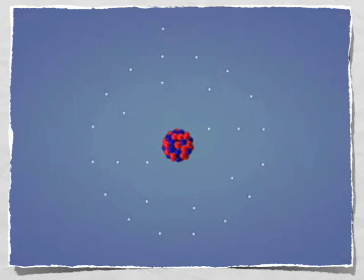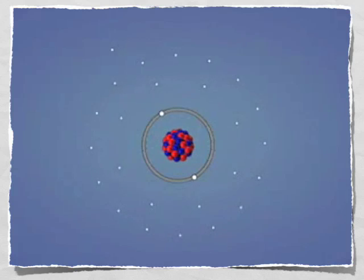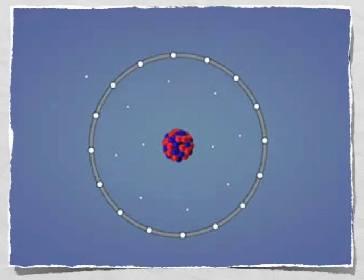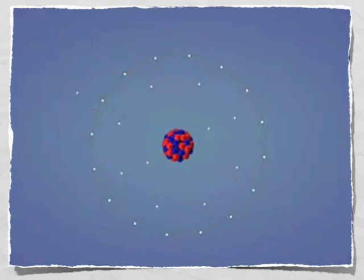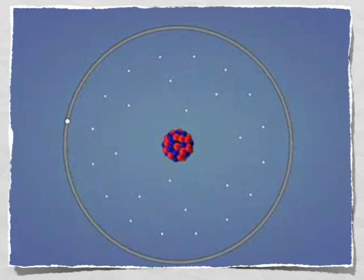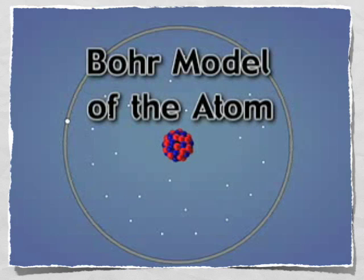Bohr proposed that these orbital paths, or energy levels, are located at various distances from the nucleus. Today, we refer to Bohr's theory as the Bohr model of the atom.